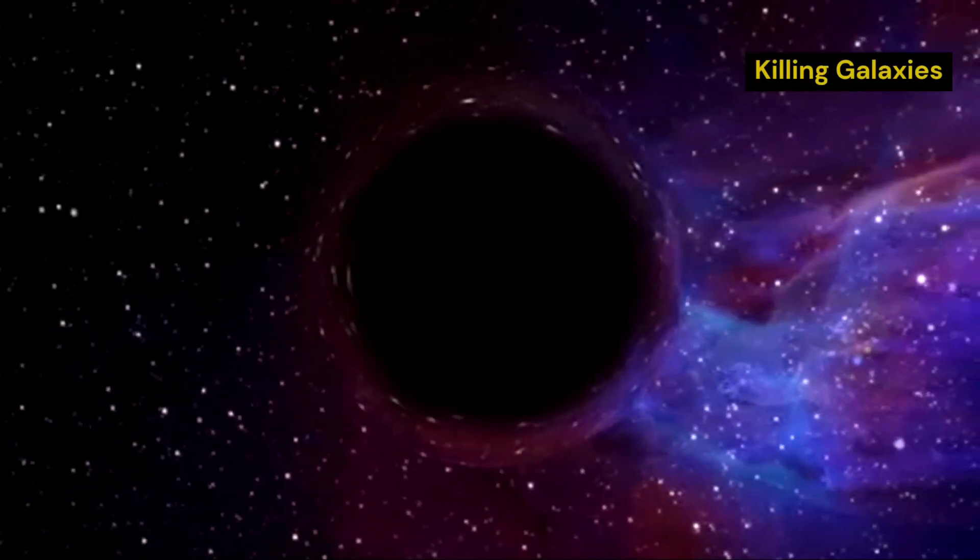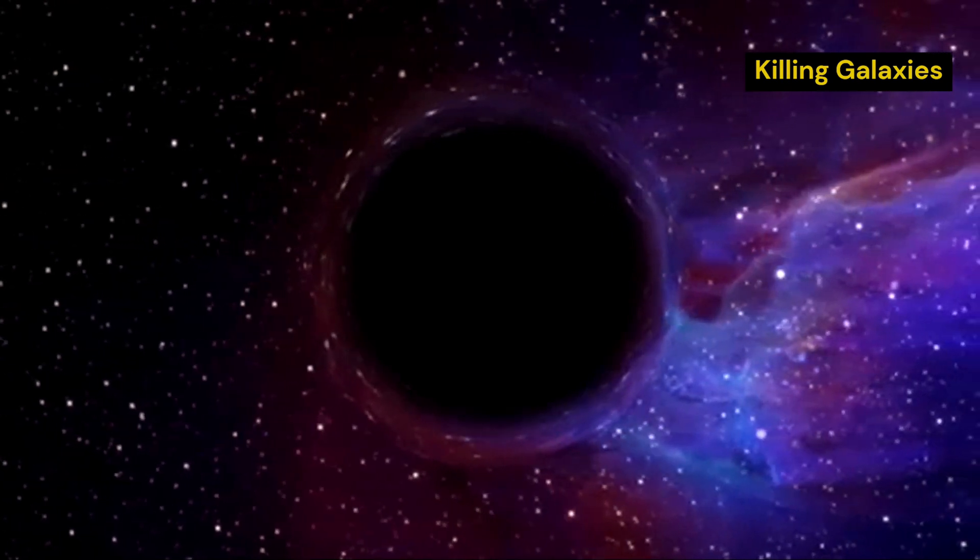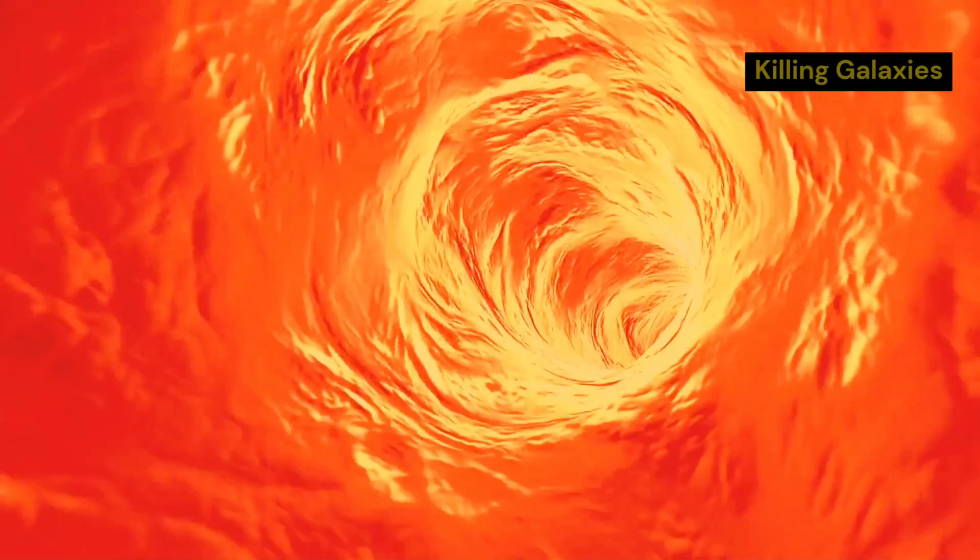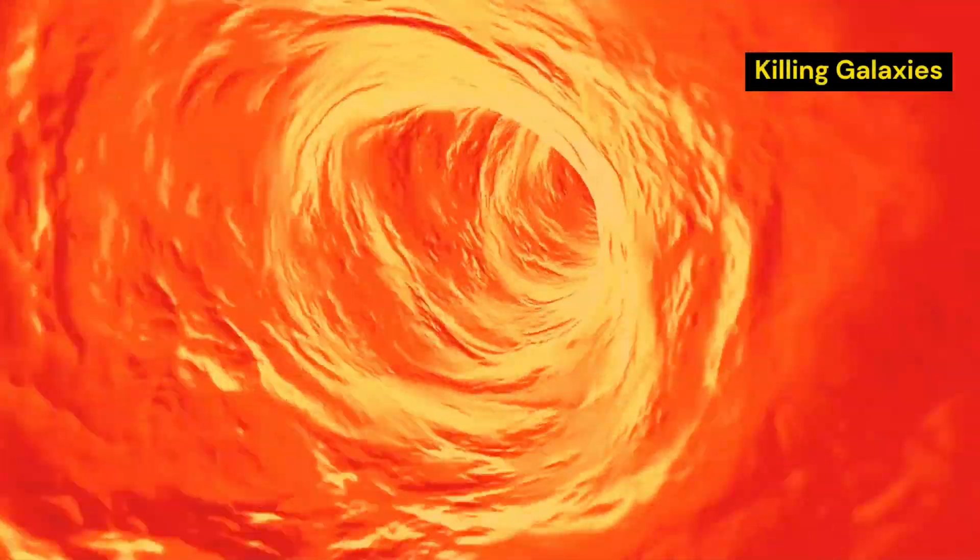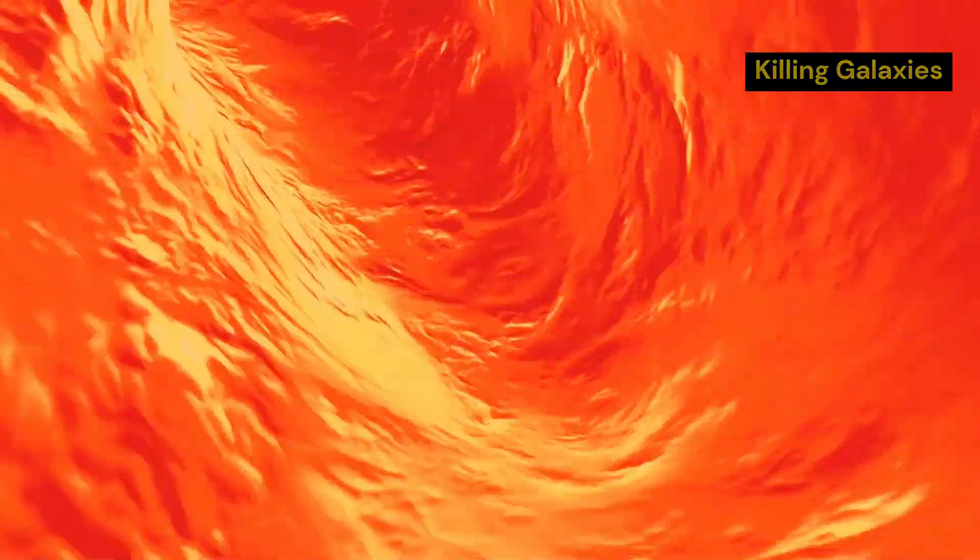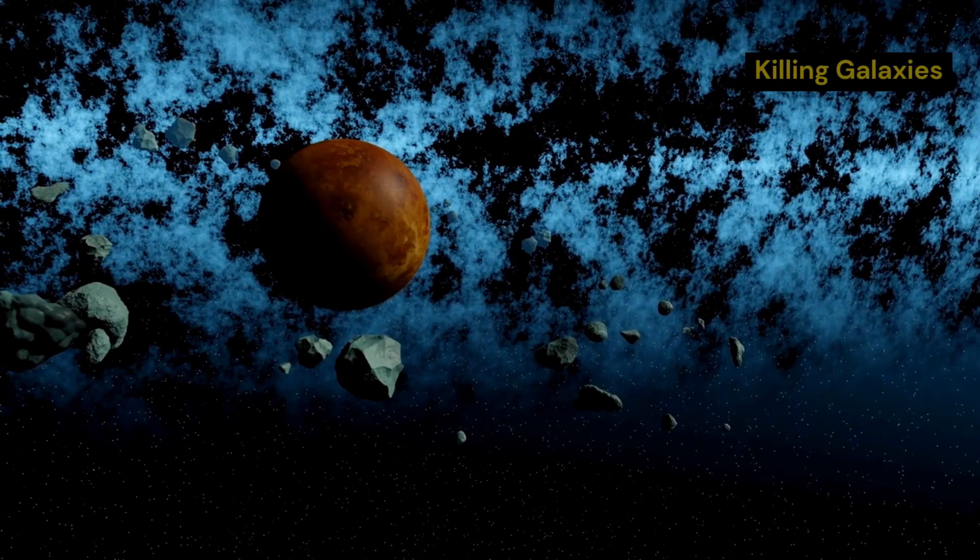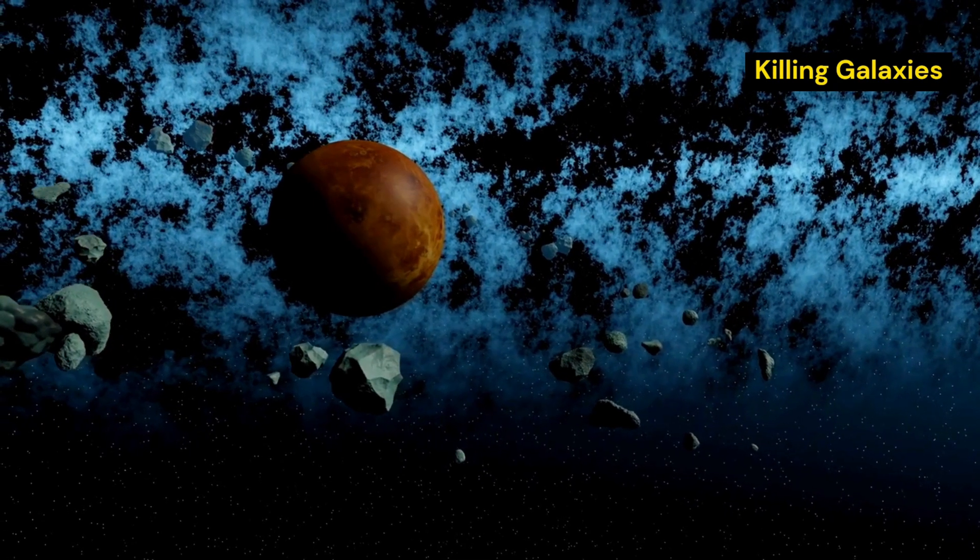As gas and dust fall into the supermassive black hole at the centre of a quasar, they release a tremendous amount of energy. This energy can heat up the surrounding gas and dust, preventing it from cooling and collapsing to form new stars. This can effectively shut down star formation in the galaxy.